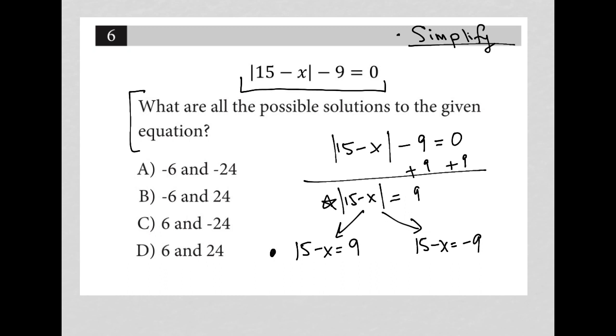I solve these two equations separately. To do so, I subtract 15 from both sides here. And I'm left with negative x is equal to negative 6. And therefore, positive x is equal to positive 6. That's one solution.